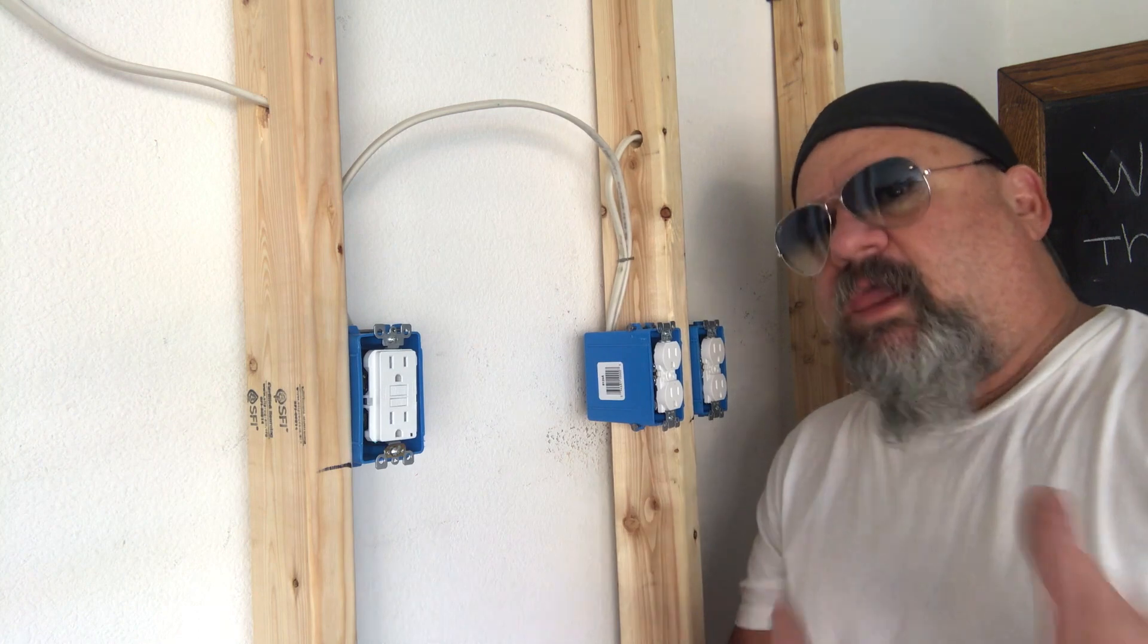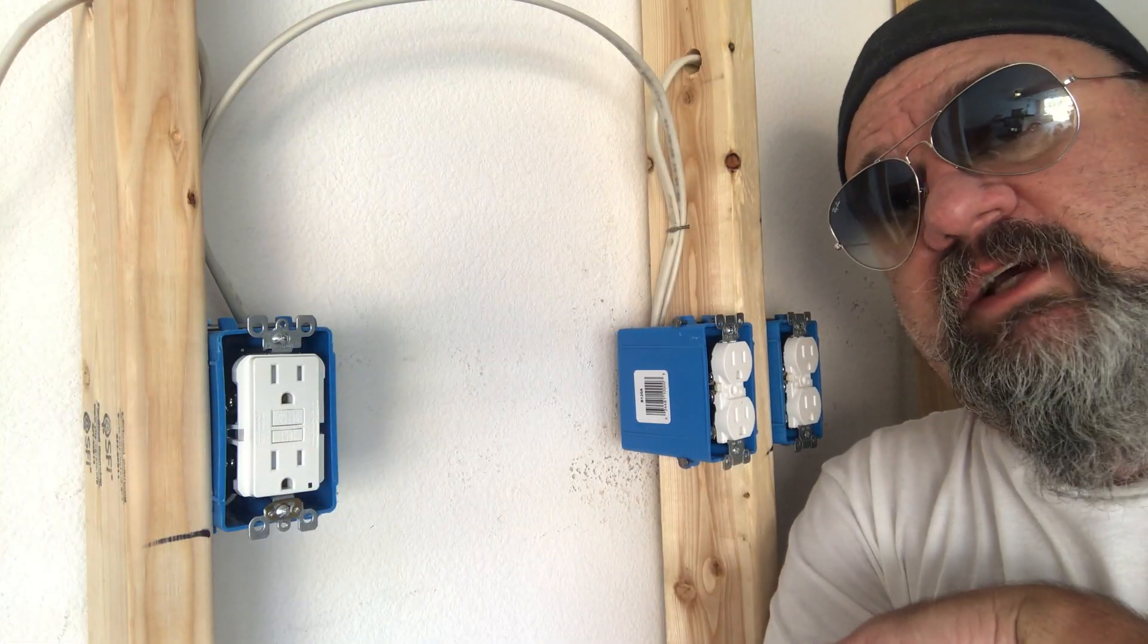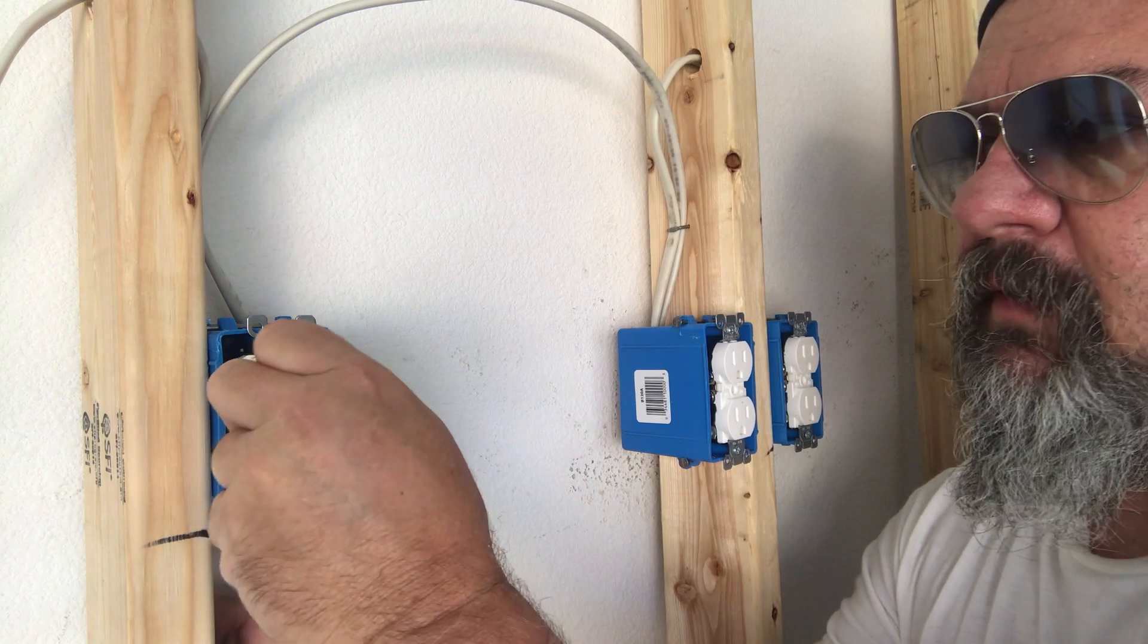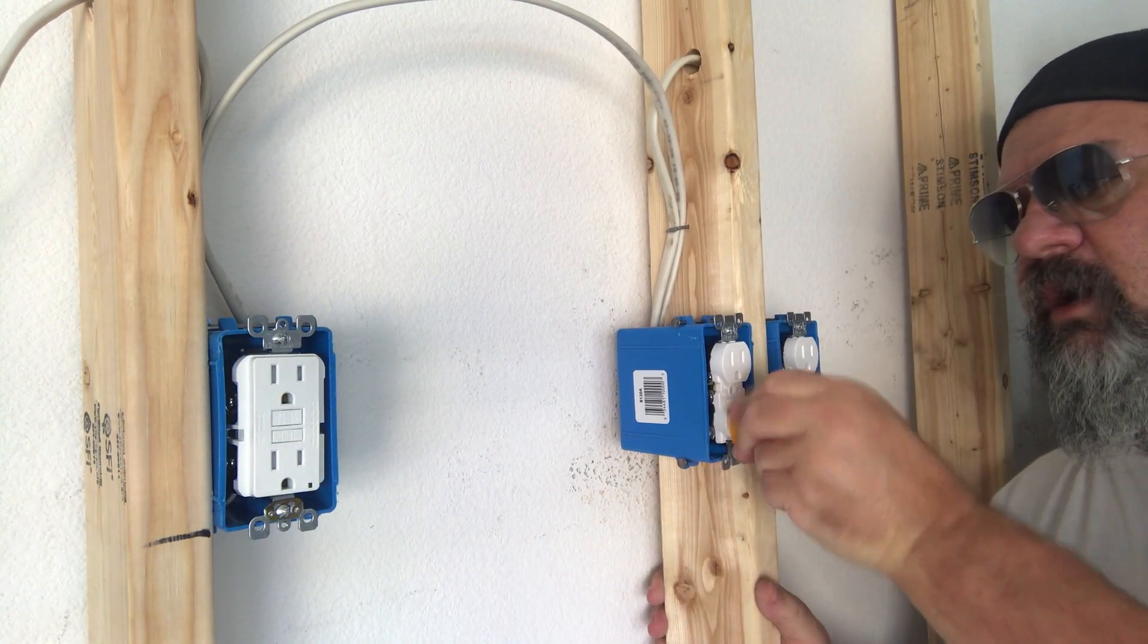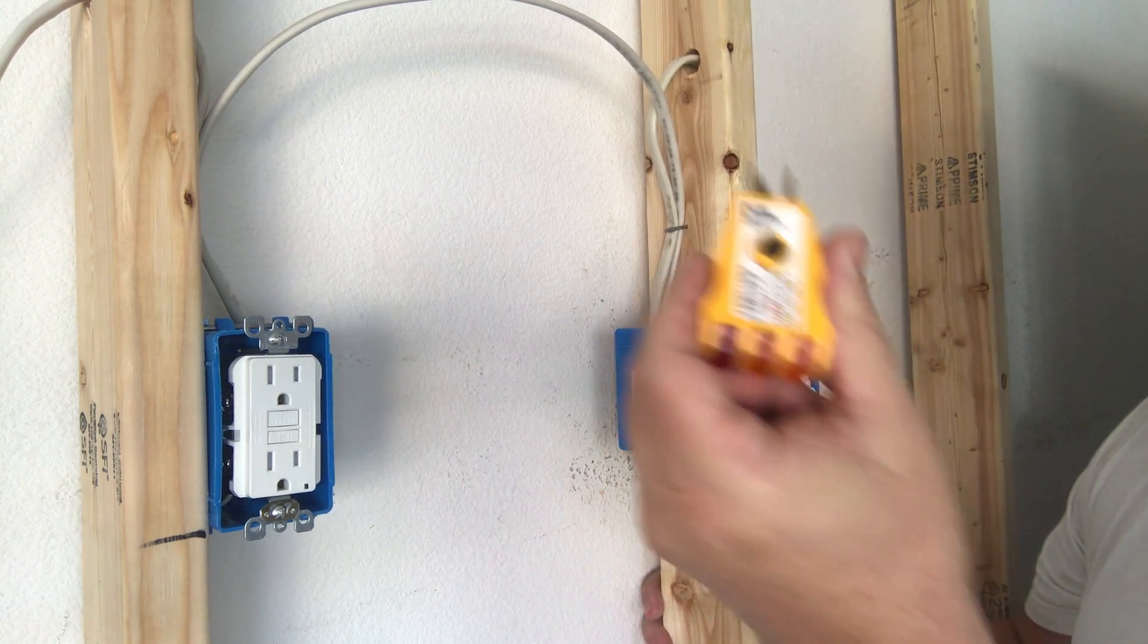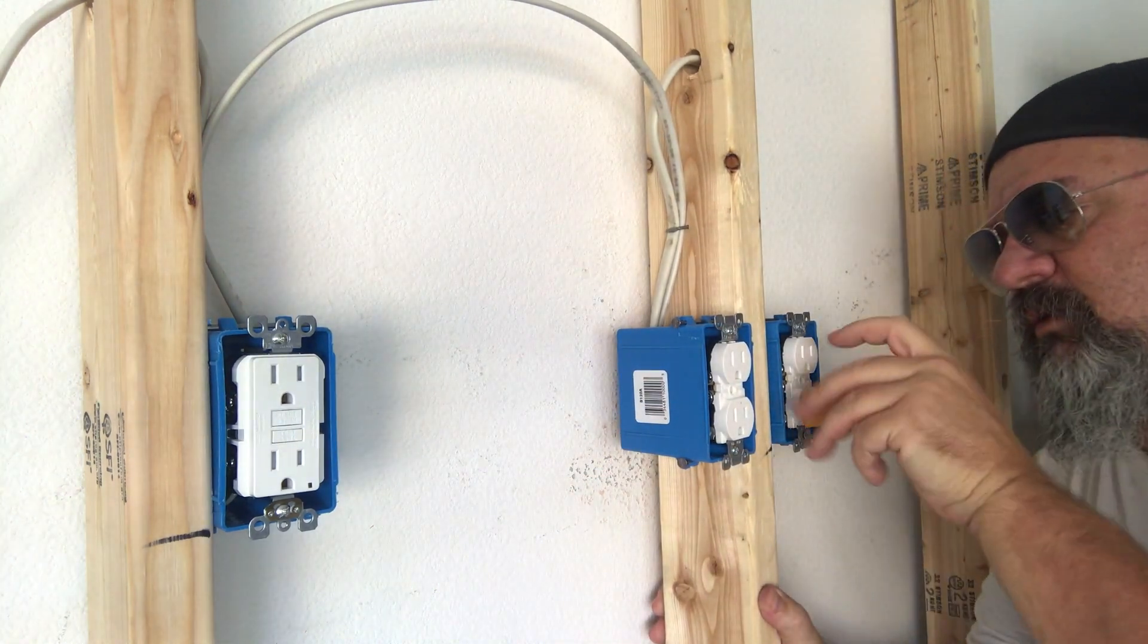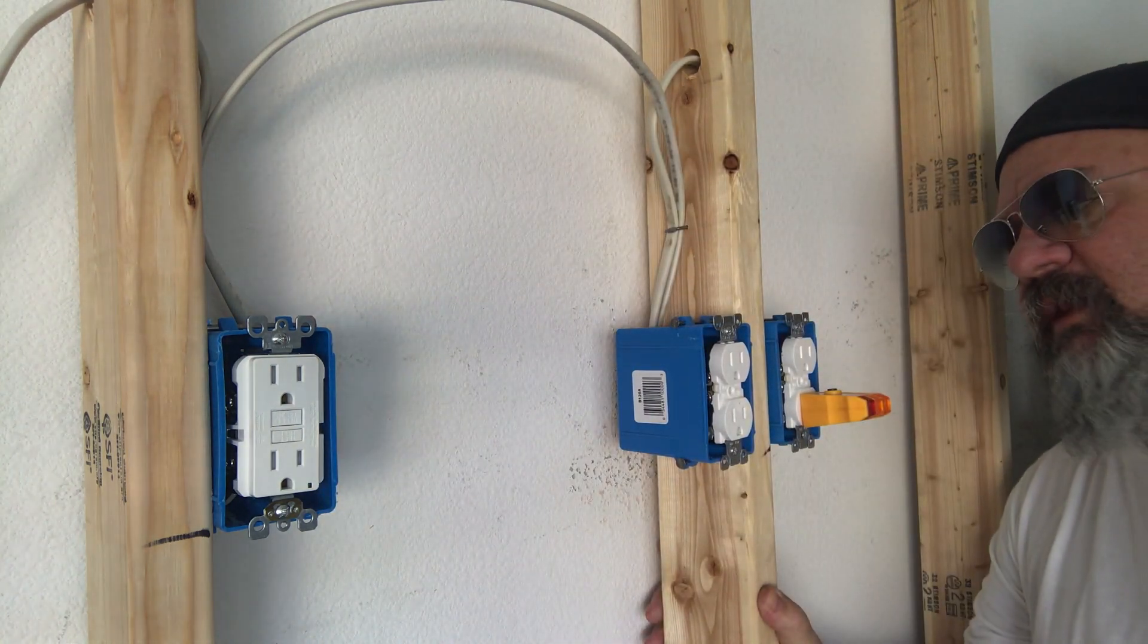Now everything's energized. First thing we do, we know it's all wired up. We reset the GFI, the reset button right on top. All right, it's reset. Let's see if we got power to the other plugs. Yes we do. And from our indicator on here, these two lights here shows that we wired our polarity, everything's correct.